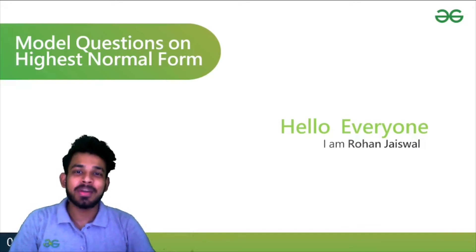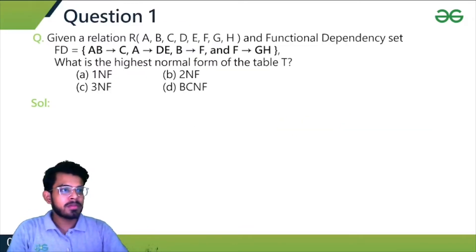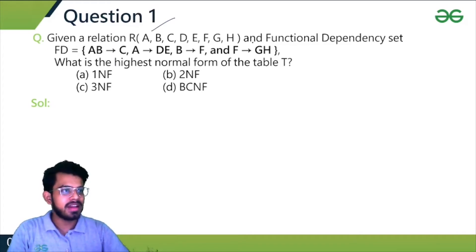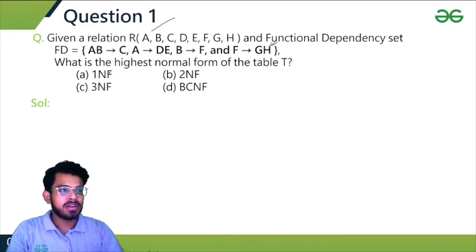Hello everyone. In this video lecture we'll be doing some more questions on how to find the highest normal form of a particular relation. So let's start with the very first question. Given a relation R which has attributes A to H, and we have a functional dependency set FD with these functional dependencies. We have to find out the highest normal form.